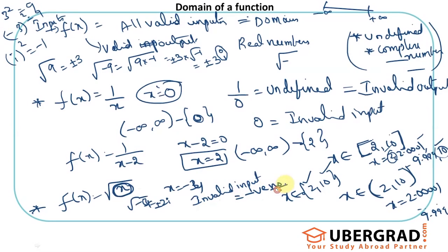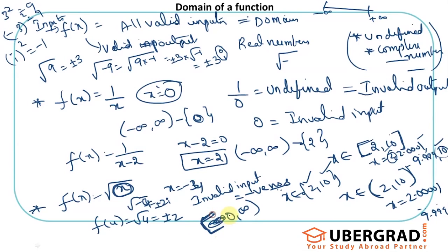Negative numbers are invalid inputs. 0 is fine — √0 = 0, that's okay. √2, √4 — for example √4 is plus or minus 2, so f(4) gives plus or minus 2. One input can give multiple outputs; that's acceptable. But I cannot have a negative input which throws a complex number as output. So the domain for f(x) = √x is everything from 0 to infinity, with 0 included — so I use a square bracket at 0.